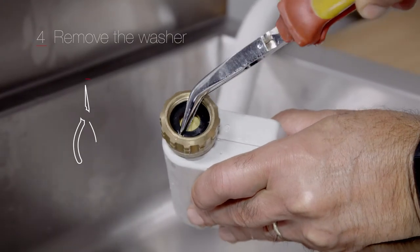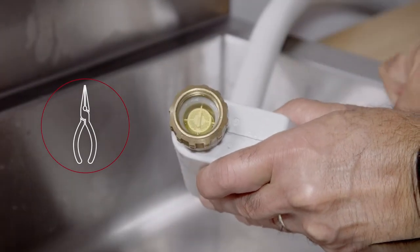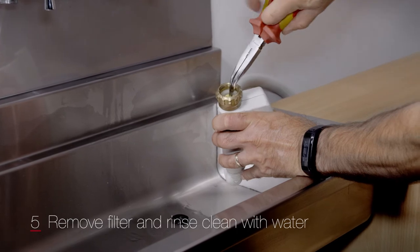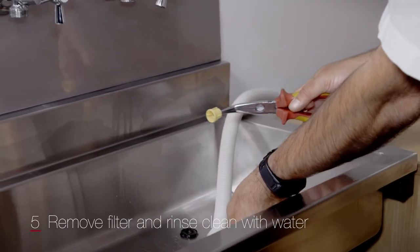Carefully remove the washer. You may want to use pliers for this. Using the same pointed pliers, carefully remove the filter and rinse it clean under the tap.